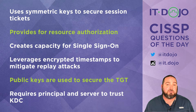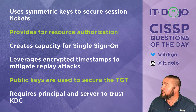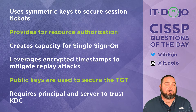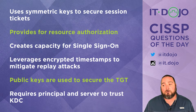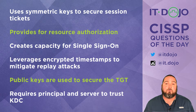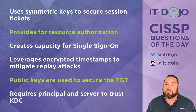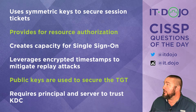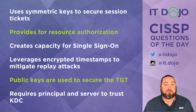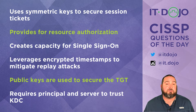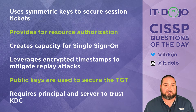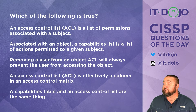Both of them have to trust Kerberos in order for any of this to work. So the incorrect answers — which are the answers we were looking for in this question — are: that the ticket-granting ticket is secured with asymmetric keys (not true), and that Kerberos provides a mechanism for authorization to access resources (also not true). Therefore those are the correct answers to this question.